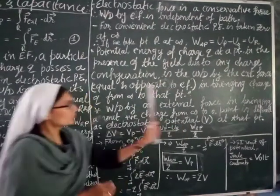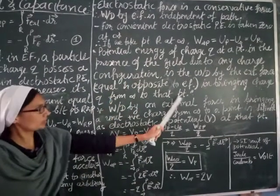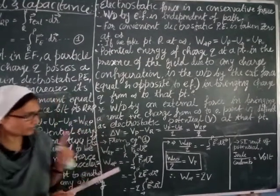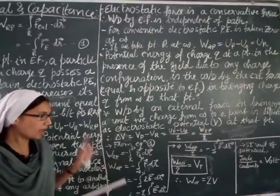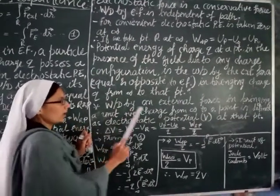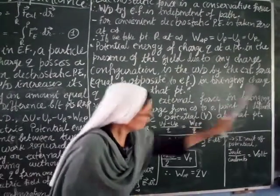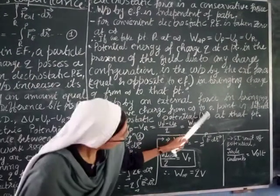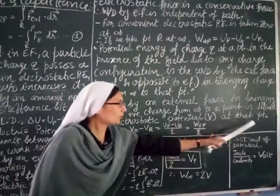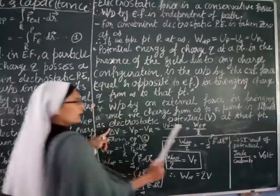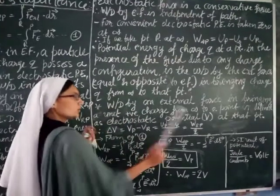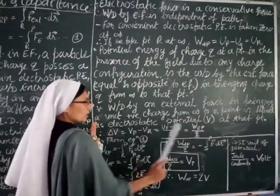For convenience we have taken R as infinity, and this is the final definition. Mathematically, the work done by an external force in bringing a unit positive charge from infinity to a point is defined as the electrostatic potential V at that point.